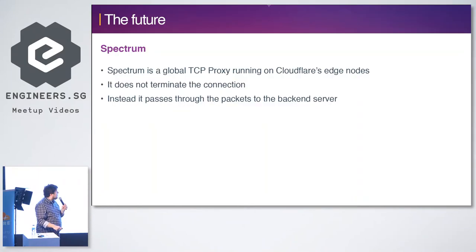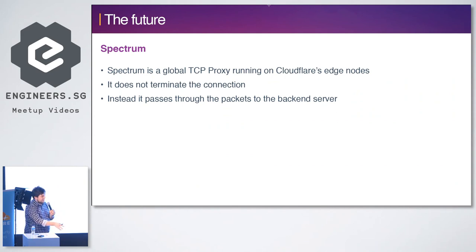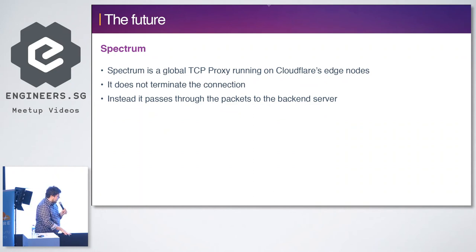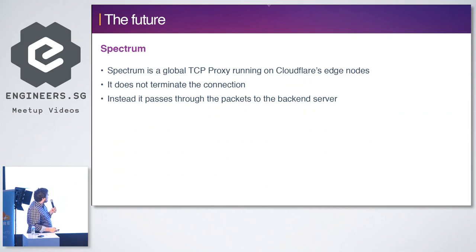Looking a bit into the future: one of the newest projects Cloudflare is working on is Spectrum. Where they came from was looking at HTTP and HTTPS and doing all their DDoS prevention. But now they're also looking at plain TCP connections — not terminated but proxied plain through Cloudflare — and doing DDoS prevention at the edges. That's something we're definitely evaluating and looking into.